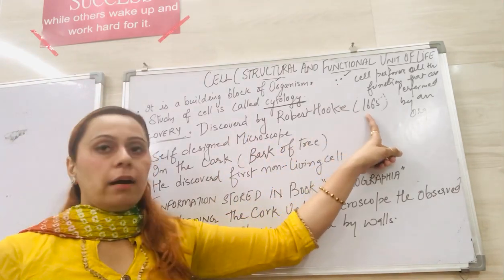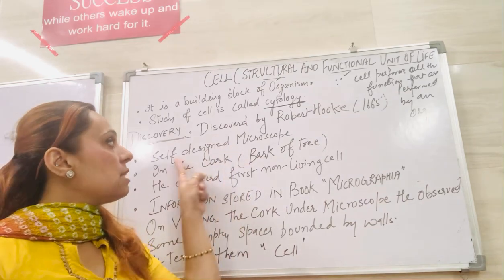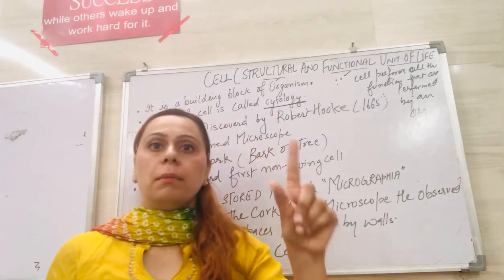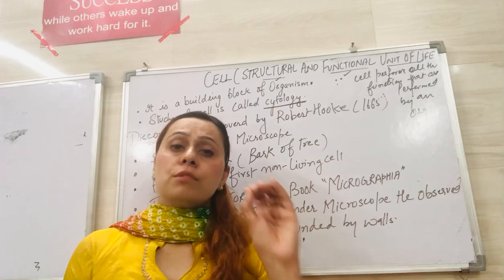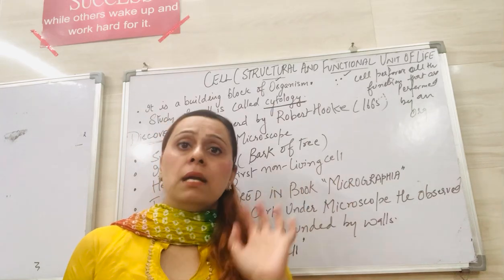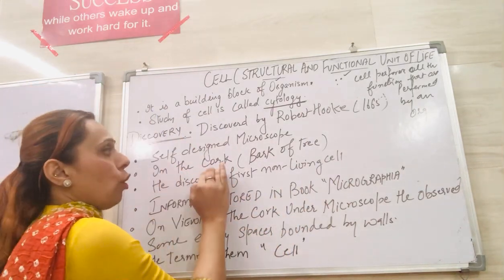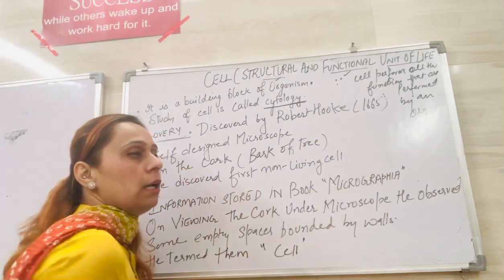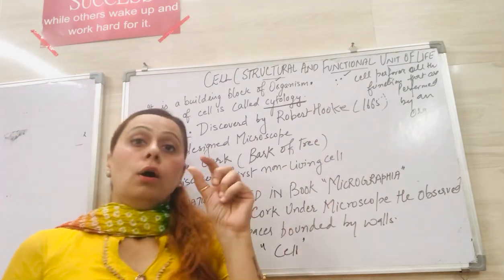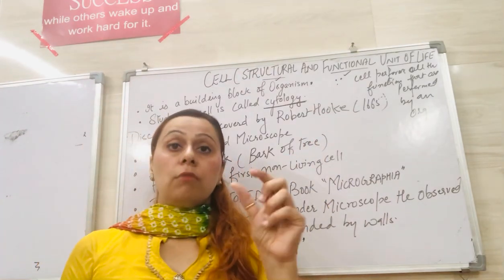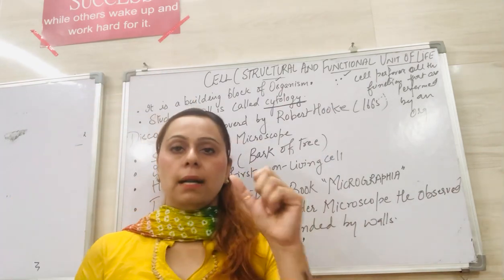The first cell was discovered by Robert Hooke in 1665, under a self-designed microscope that was very simple and made by him. He discovered the cell in the cork — the bark of the tree. You know that on bottles there is a wooden cap made of cork.